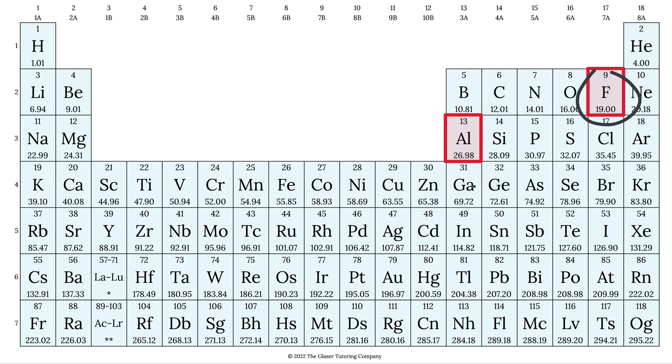Here's aluminum. Here's fluorine. And the number down here will represent either grams per mole or AMU, depending upon if you're calculating molar mass or molecular mass.